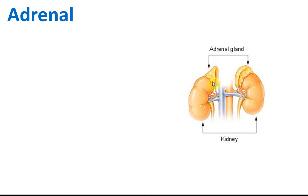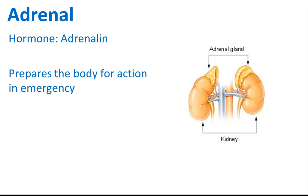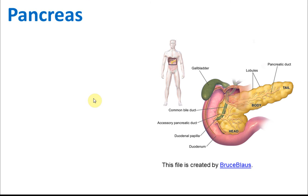The adrenal glands are located above the kidneys. The hormone they produce is called adrenaline. The function of adrenaline is to prepare the body for action in an emergency. For example, if you're walking in the street and suddenly you see a dog running towards you, your body will secrete adrenaline to make you more alert and give you more energy if you need to run away.